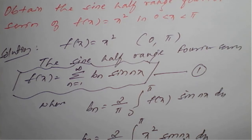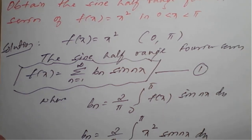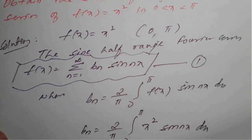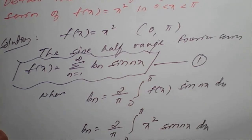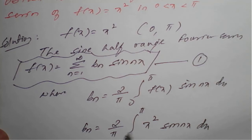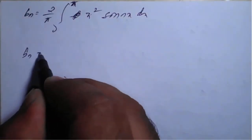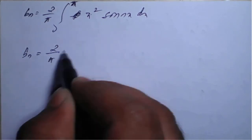Because we have a product of x² and sine(nx), we will apply Bernoulli's rule of integration by parts to simplify this integral and get the solution.